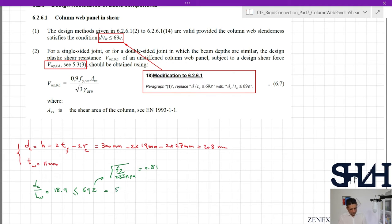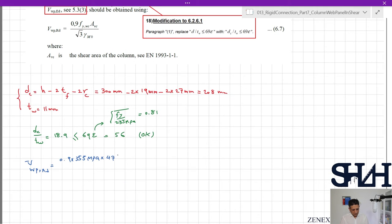This value will be 56, which means we can go forward. Item number two: for a single-sided joint or for a double-sided joint in which the beam depths are similar, the design plastic shear resistance vwp,Rd of an unstiffened column web panel should be obtained using this equation: 0.9 times fy times Avc divided by square root of 3. First let's calculate vwp,Rd. 4,743 is the shear area of the column, giving us 875 kilonewtons resistance.